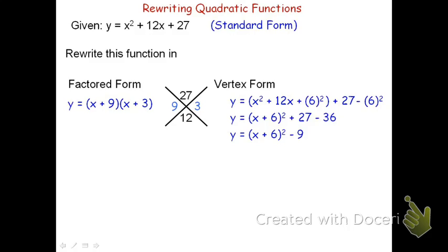Each of these forms is helpful for certain things. Standard form tells you the stretch factor, the orientation, and the y-intercept. Factored form is very helpful for finding the x-intercepts. Vertex form tells you the stretch factor, the orientation, and the vertex. Each one has pros and cons.